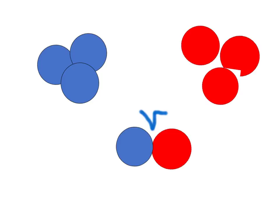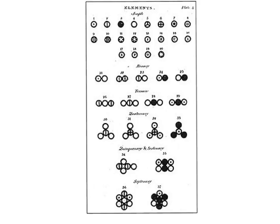That is Dalton's atomic theory. This is an actual model of Dalton's atomic theory. Although it looks more complex than our example, it demonstrates the same ideas pertaining to compounds and each element having its own identity.